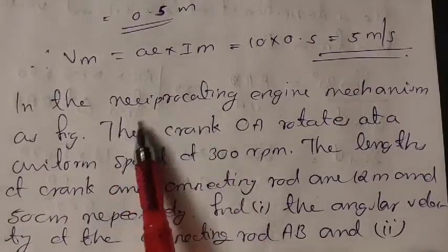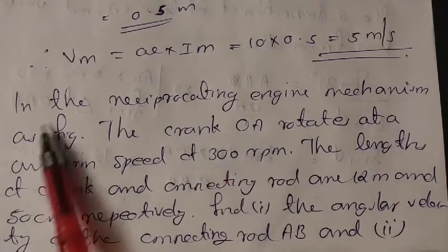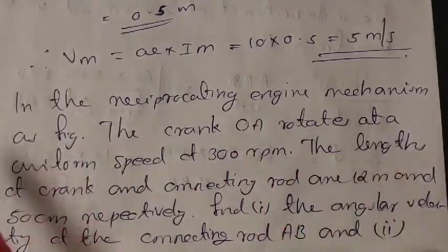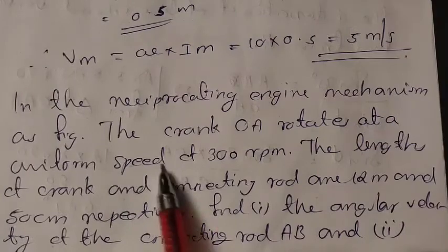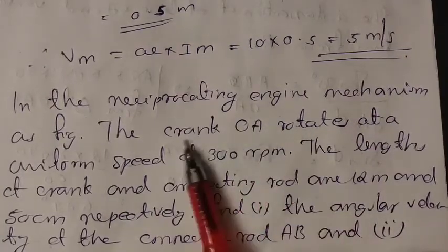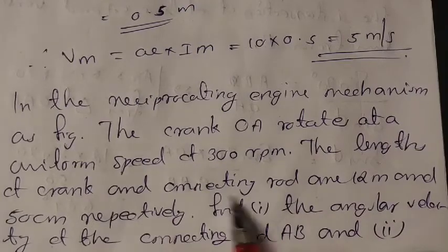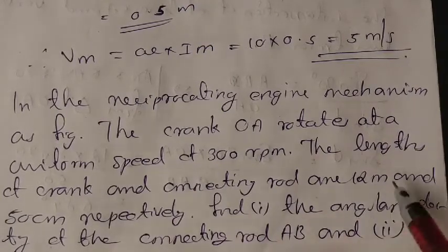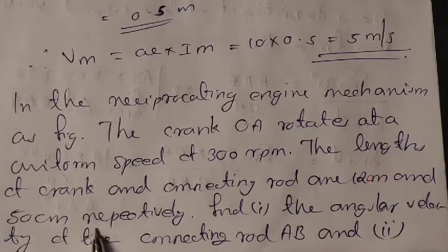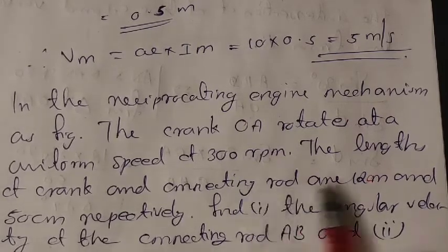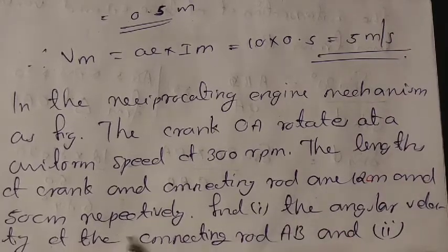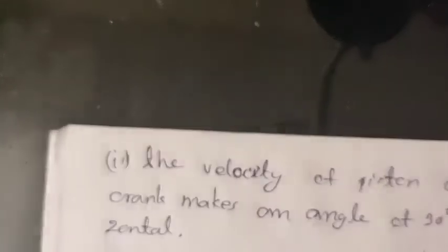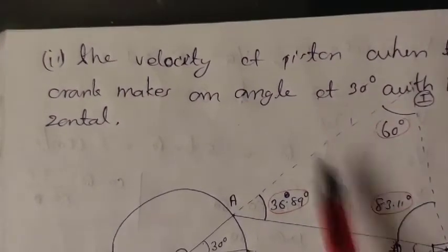The next question is about the reciprocating engine mechanism. The crank rotates at a uniform speed of 300 rpm. The length of the crank is 12 centimeters and the connecting rod AB is 50 centimeters. We need to find the angular velocity of connecting rod AB and the velocity of the piston.